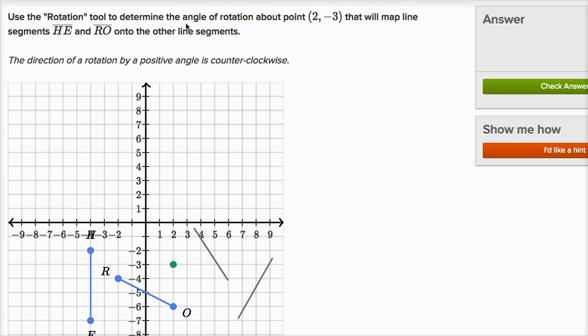Use the rotation tool to determine the angle of rotation about the point (2, -3) that will map line segments HE and RO onto the other line segments.